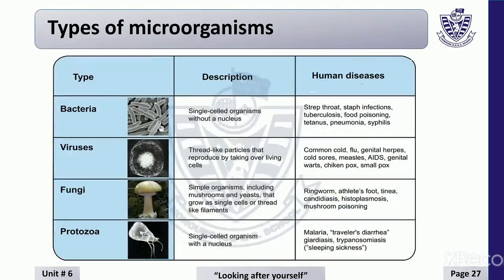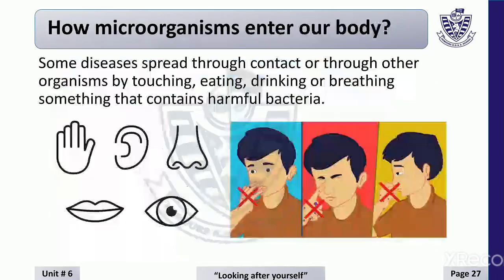Types of microorganisms: There are different types of microorganisms — bacteria, viruses, fungi, and protozoa. Microorganisms can enter the body through the nose and mouth when you breathe, eat, or drink. They can also enter the body through cuts in the skin.